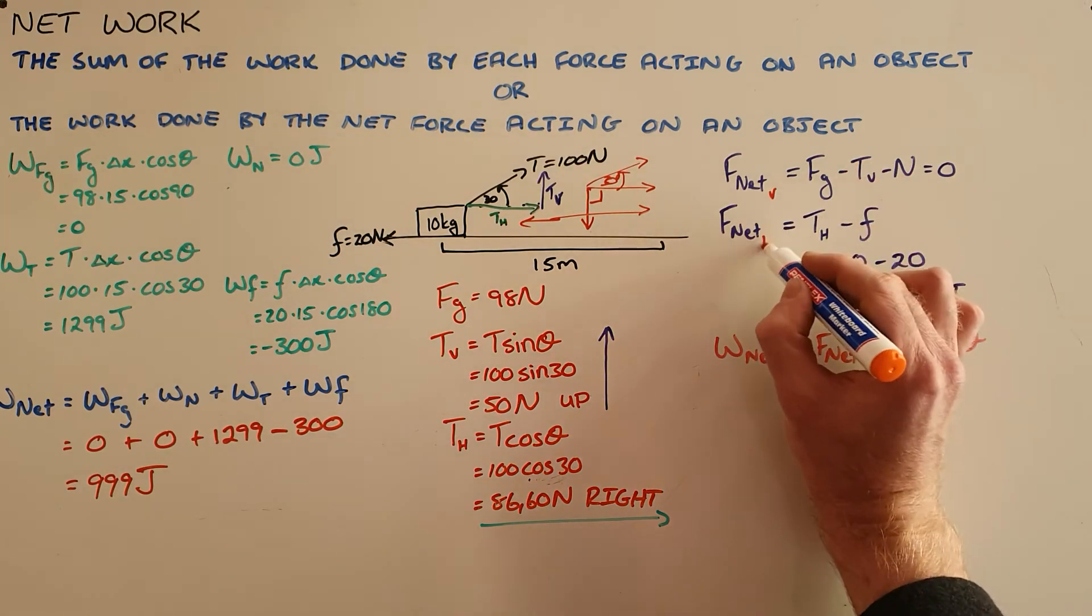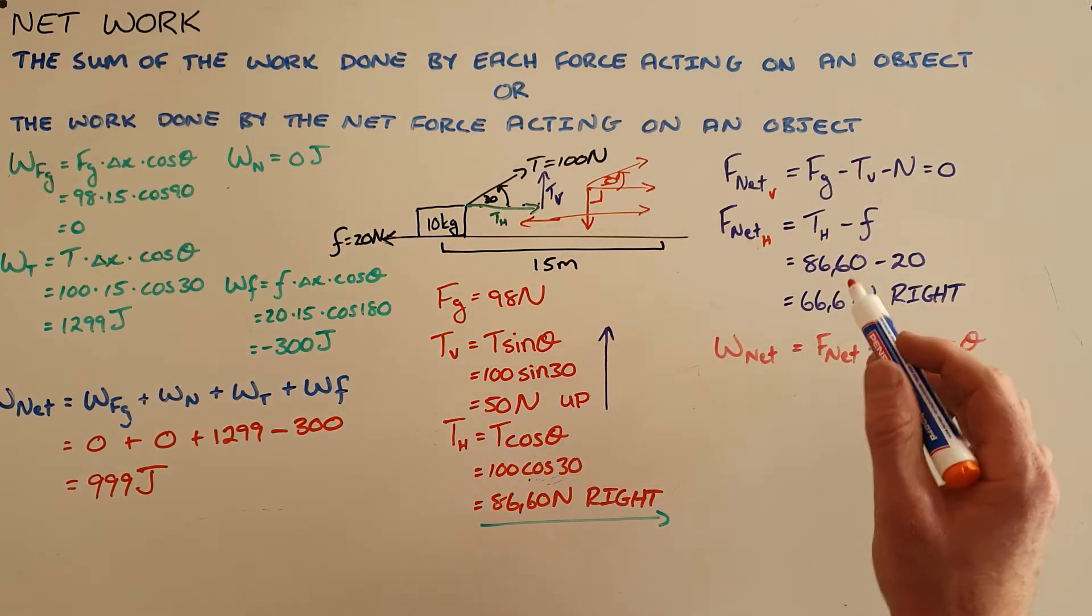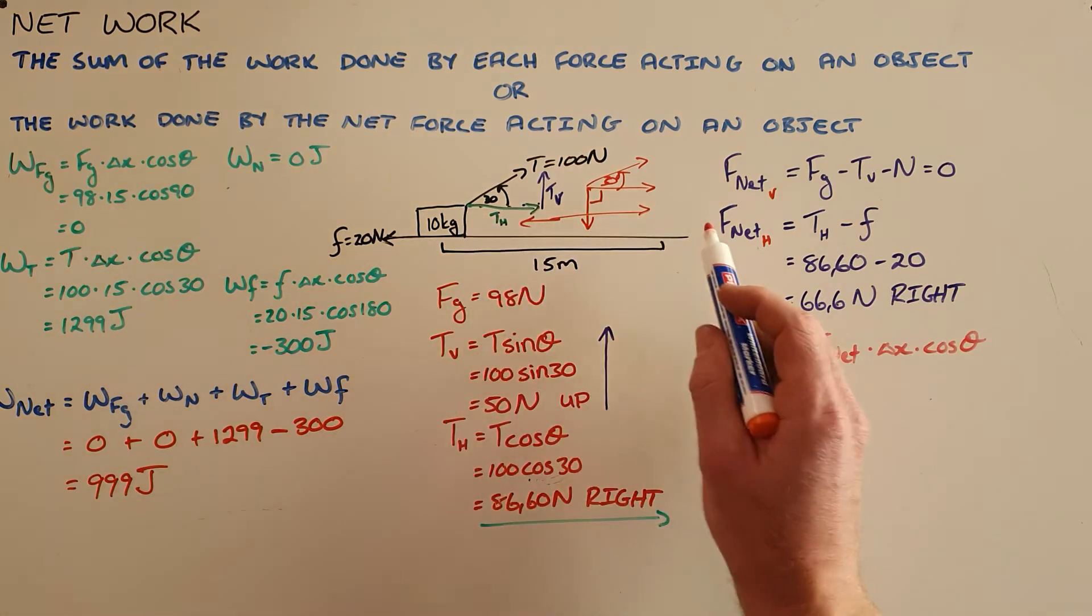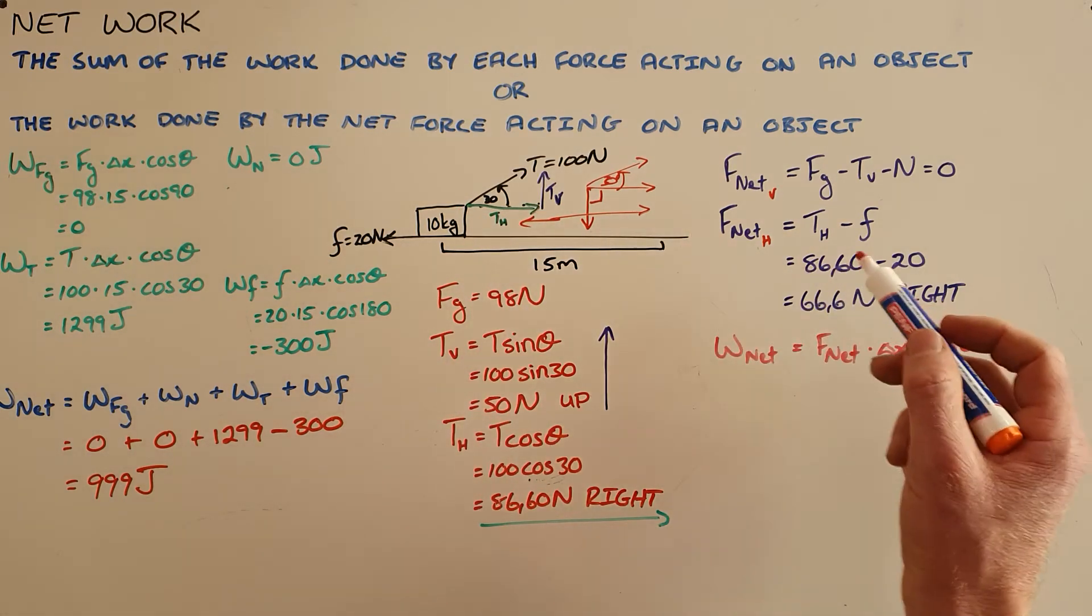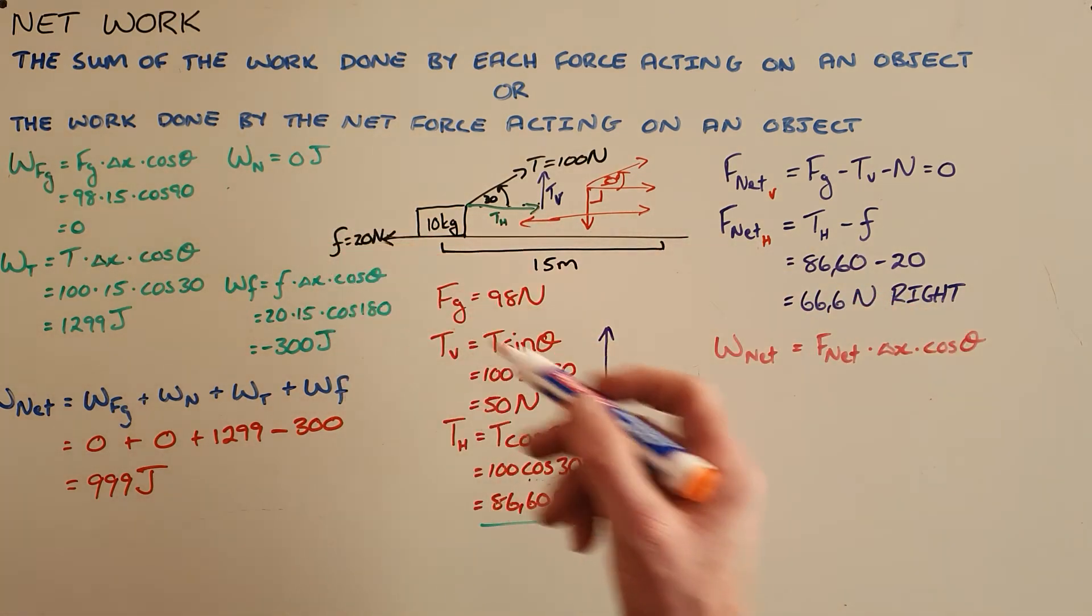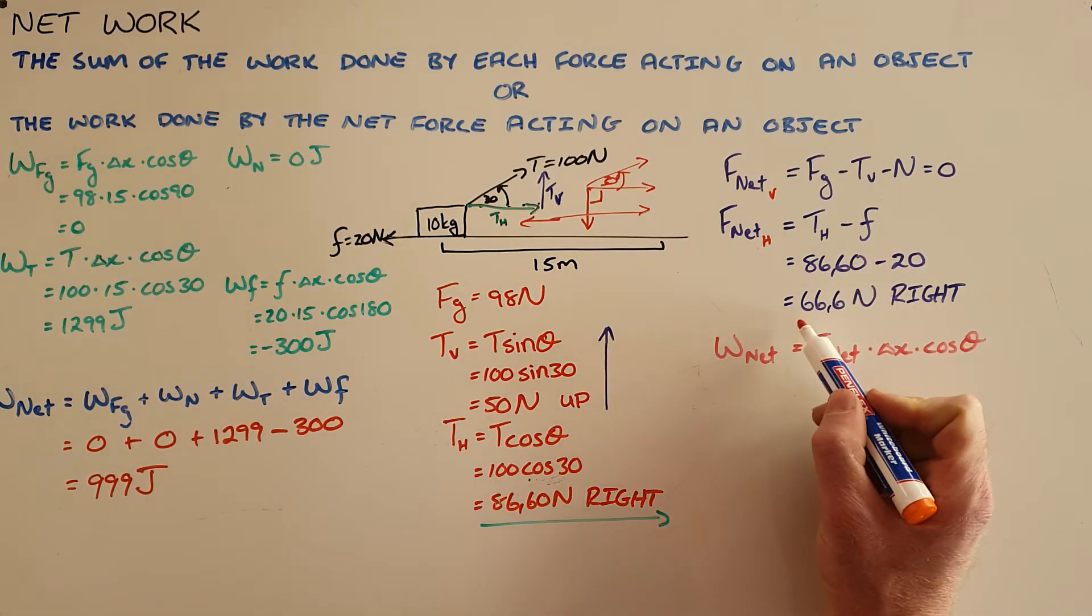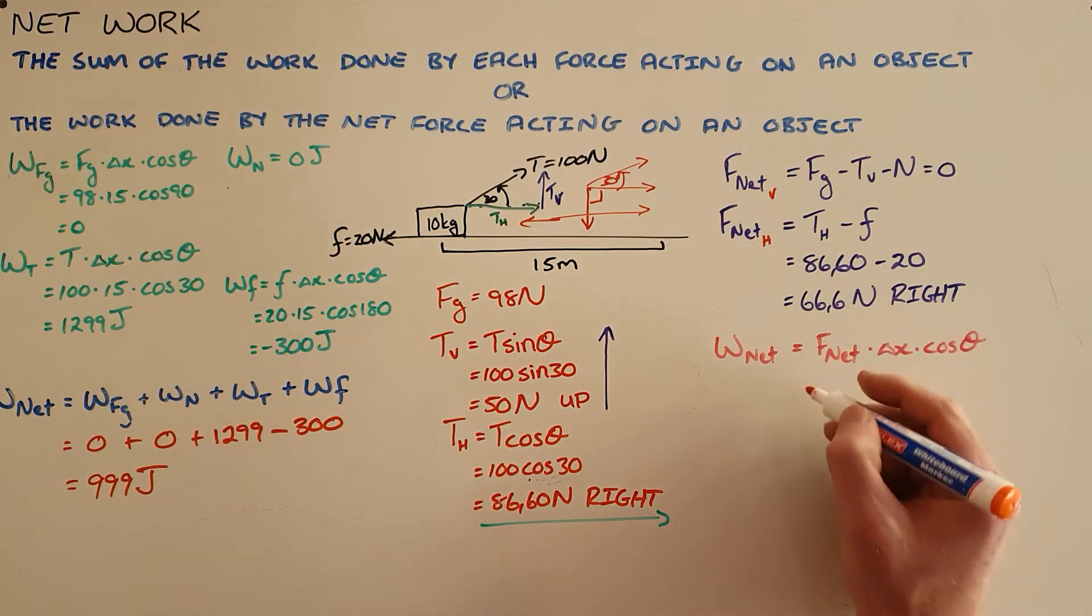And then in the horizontal plane, the net work done is equal to the horizontal component of tension pulling it to the right minus the friction force acting to the left. So we find our net force is then 66.6 newtons to the right.